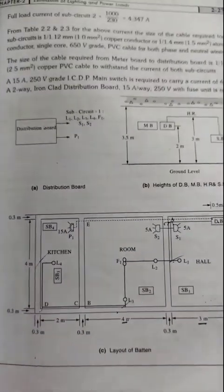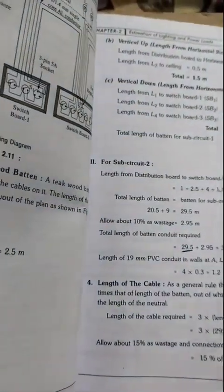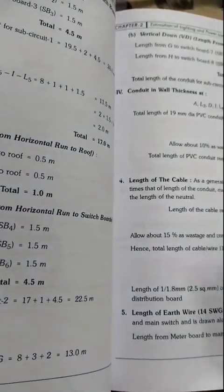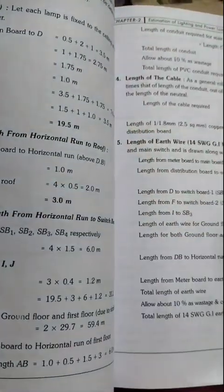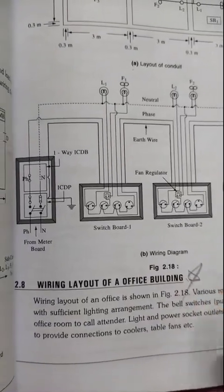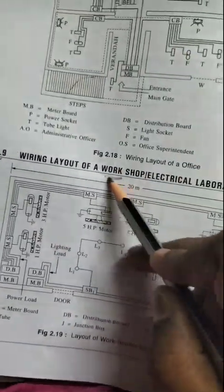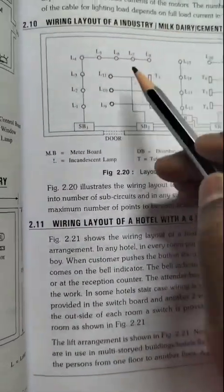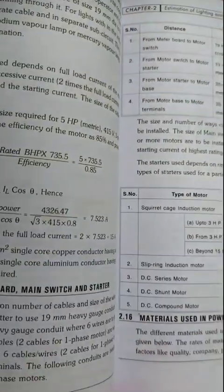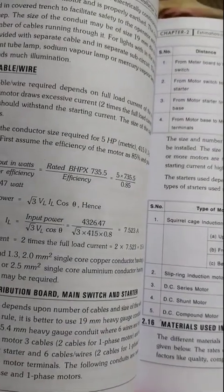There is a power socket — you need to choose from the table. Sub-circuit calculation is very important. Layouts are made. First, office building layout is made — 8 marks. This is a workshop — 8 marks. Industry is made or not — 2 marks. Size of cable calculation formula.